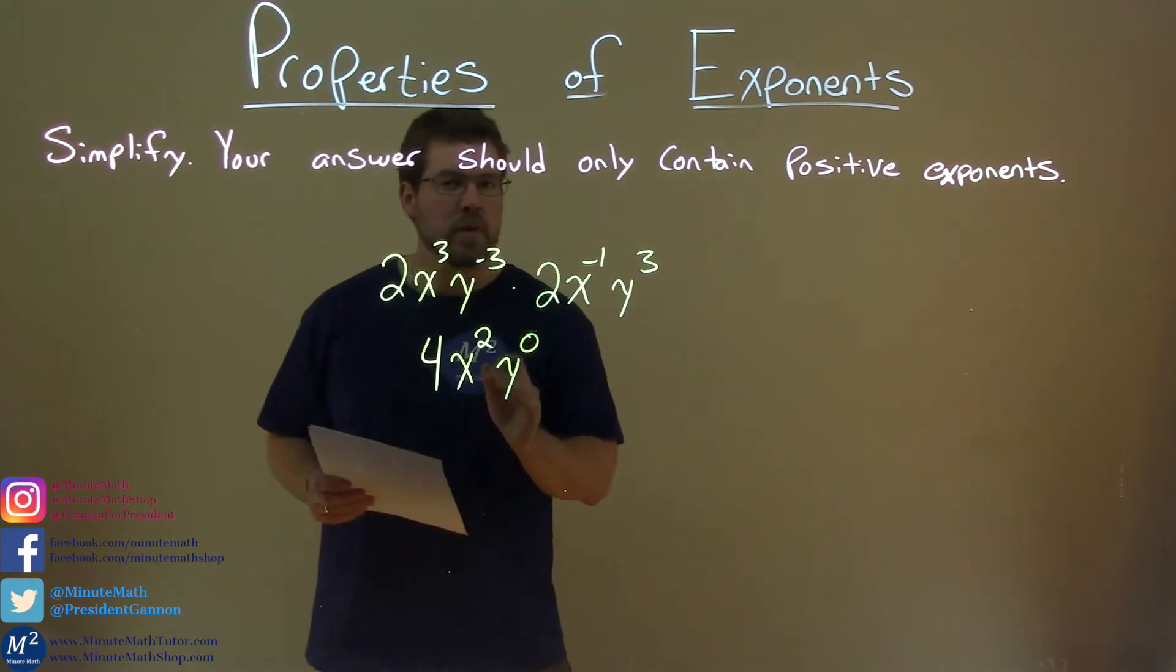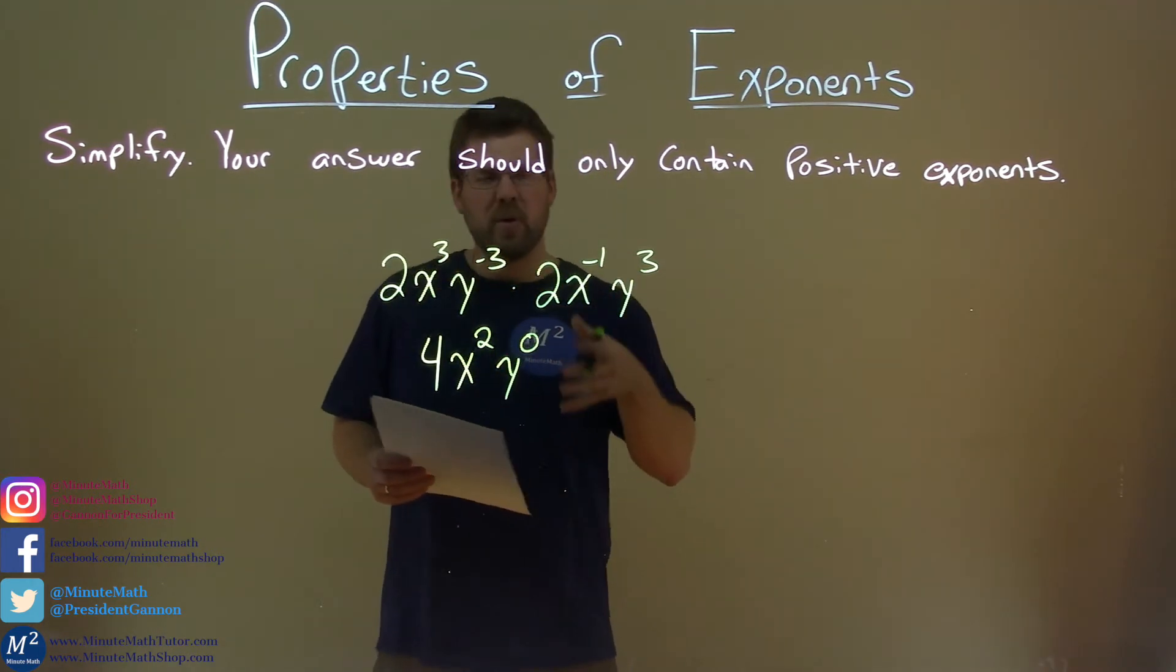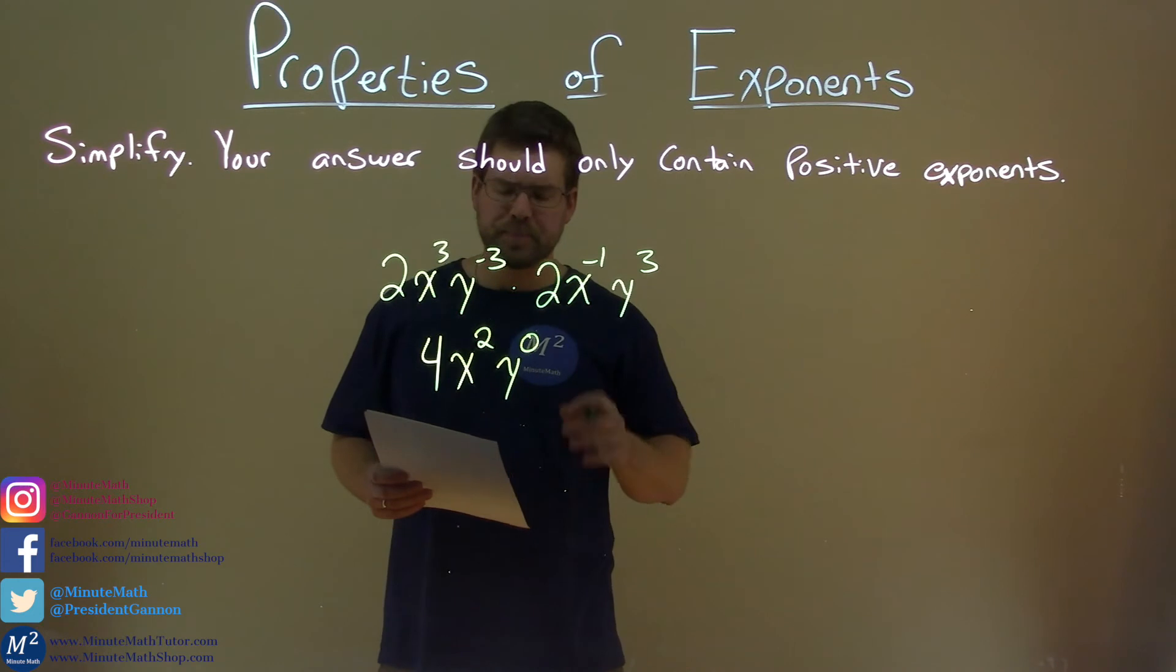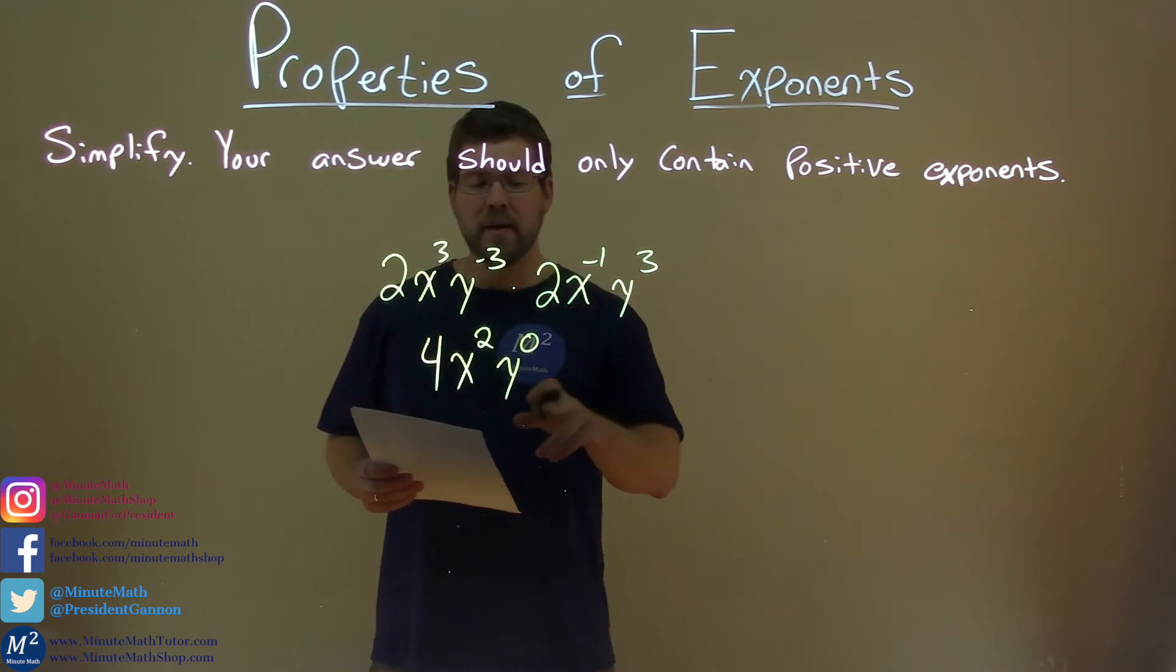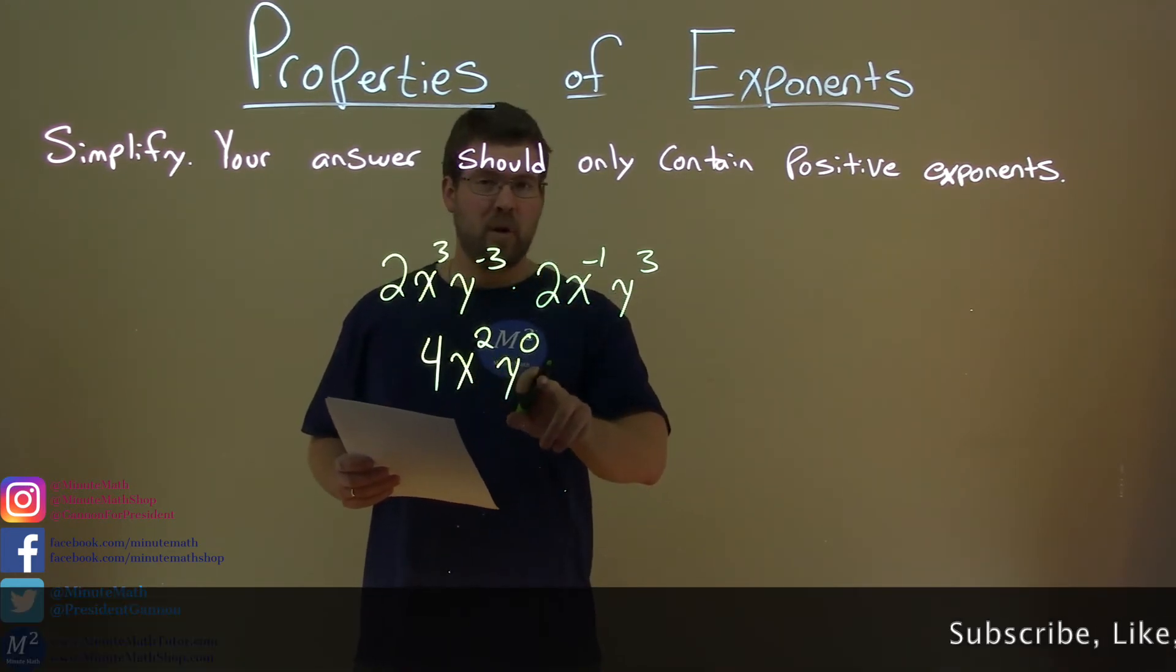But, we're not done. We never really write y to the zero power, or any variable to the zero power. Any number to the zero power is just 1. So, that's being multiplied really here by 1.